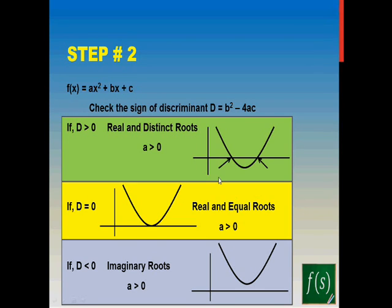I have plotted these graphs first for a > 0, which looks open upwards. If your D is equal to zero, you'll have just one root — the roots will be real and equal, and your graph will touch the x-axis at one point and then go past. If your D is less than zero, your roots will be imaginary and your graph will never cut the x-axis.